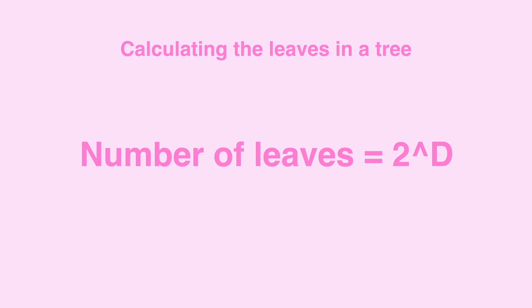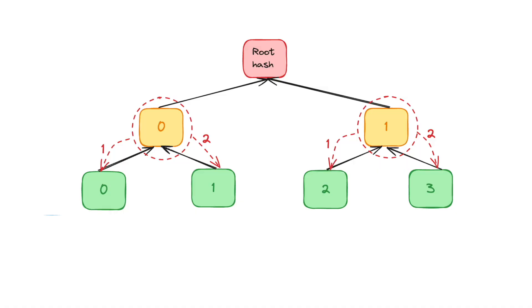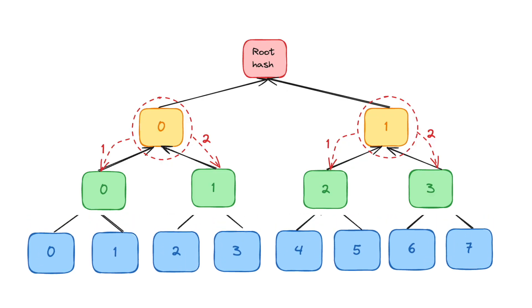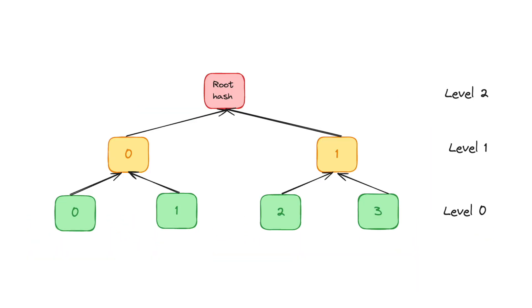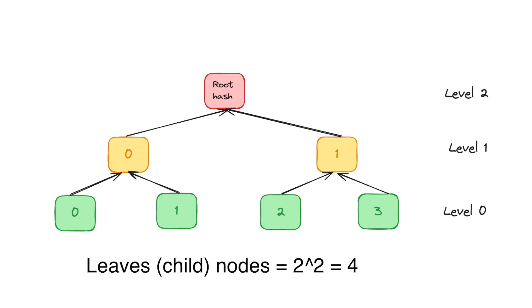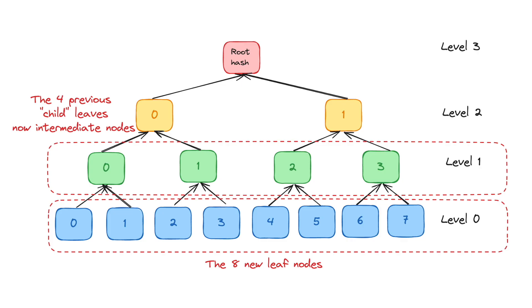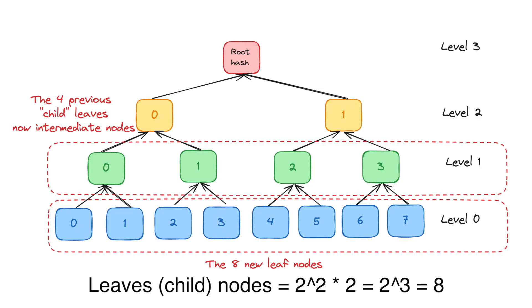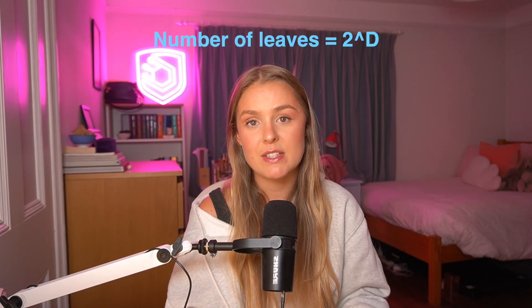For example, a tree of depth two has two-to-the-power-of-two, or four, leaf nodes. If we add a level to get a depth-three tree, each intermediate node gets two child nodes, doubling the leaves to eight — that is, two to the power of three. So each time we add a level, the number of leaf nodes doubles, confirming that number of leaves equals two to the power of the depth. For a depth-20 tree as in Tornado Cash, we'd have two-to-the-power-of-20 leaves, meaning two-to-the-power-of-19 hash calculations just for level one — a massive amount of on-chain computation.